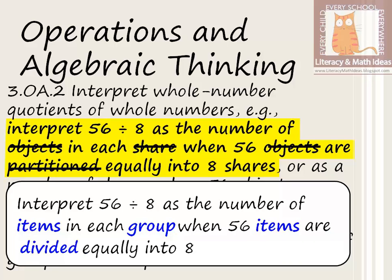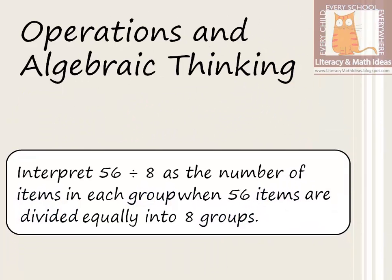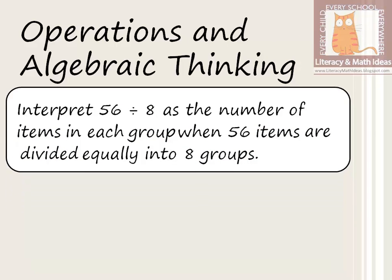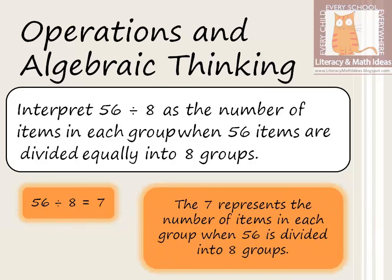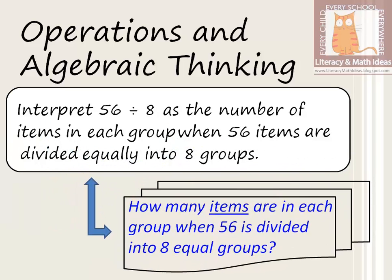We know that 56 divided by 8 is 7. In the first approach, the 7 represents the number of items in each group when 56 are divided equally into 8 groups. The first approach answers this question: how many items are in each group when 56 — the dividend — is divided into 8 equal groups? The 8 is called the divisor.